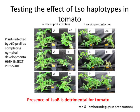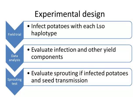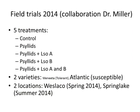This preliminary data showed us that the presence of B seems detrimental for the tomato. The experiment we conducted in 2014 is a field trial in which we infected potato with each LSO haplotype. We evaluated the infection and other yield components, and in the future we're going to look at sprouting and whether there is seed transmission. The field trial is composed of five treatments: a control, psyllid with no bacteria, psyllid with LSO-A, psyllid with LSO-B, and psyllid with A and B. We tested two varieties, Winneta and Atlantic, but I'm only going to talk about Atlantic. The experiment was conducted in two locations: West Laco in the spring of 2014 and Spring Lake in the summer of 2014.